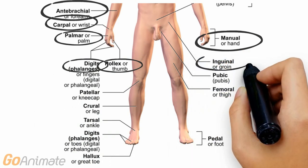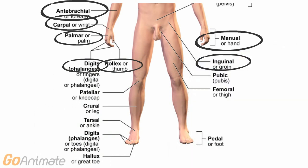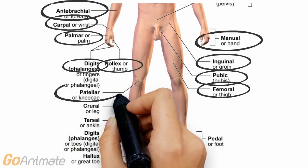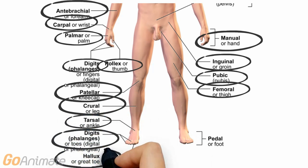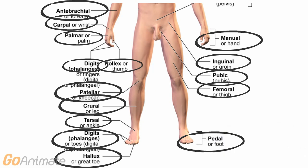In the lower extremity we have the inguinal, pubic and femoral regions. There is also the patella or kneecap. The crural region, which is the shin area, and the tarsal or ankle region. The toes, like the fingers, are called digits, with the big toe called the hallux. The entire foot is called the pez or pedal region.